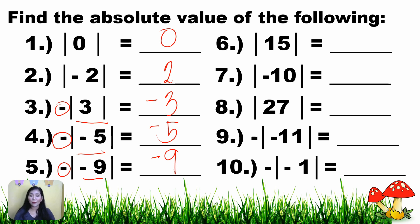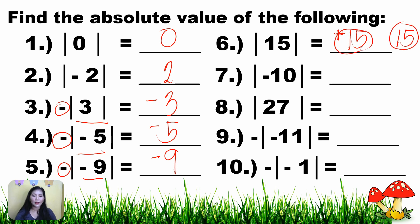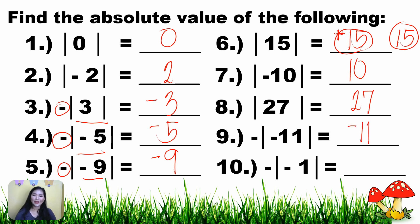Number six: the absolute value of 15 — there is no negative outside, so the answer is positive 15. Writing a number without a sign means positive, and writing a positive sign means the same thing. Number seven: the absolute value of negative 10 — that is 10. Number eight: the absolute value of 27 — that is 27. Number nine: that's negative 11. Number ten: that's negative 1.